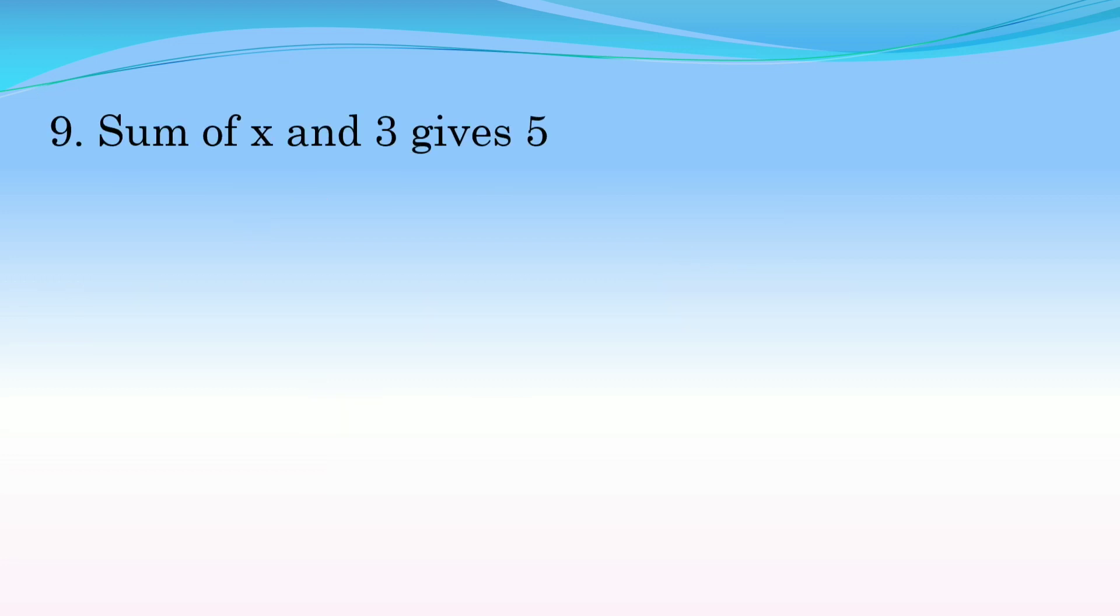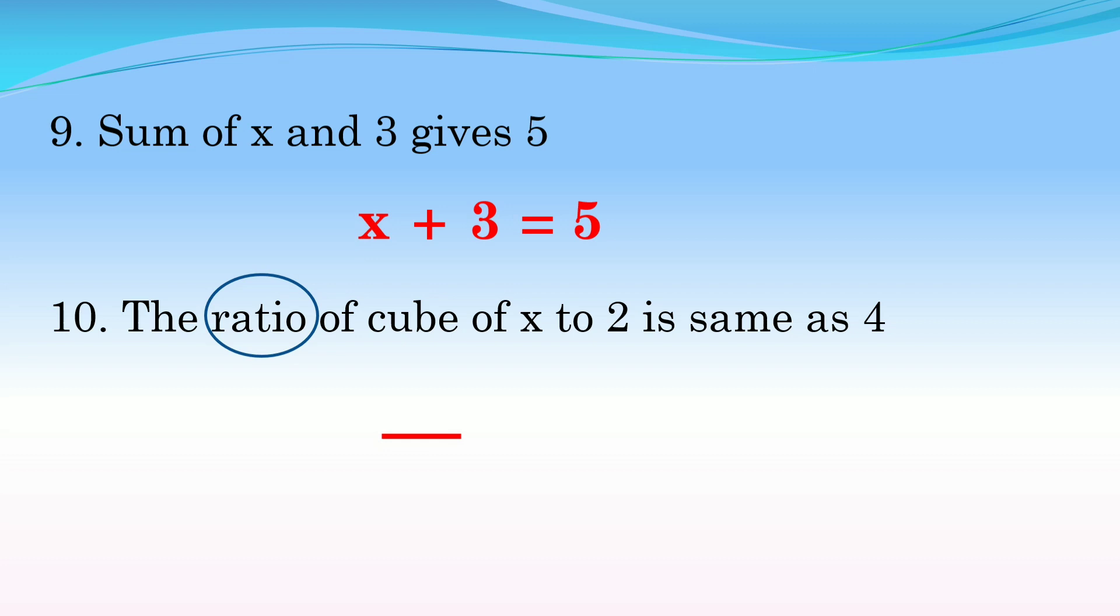Number nine: Sum of x and 3 gives 5. Sum is addition, so x and 3: x + 3. 'Gives' means equals, which equals 5: x + 3 = 5. Number ten: The ratio of cube of x to 2 is same as 4. Ratio is division. Cube of x is an exponent, so x raised to 3: x³. To 2, so divide by 2. 'Is same as 4' - 'same' means equals sign, which equals 4: x³/2 = 4. That's the answer for number ten.